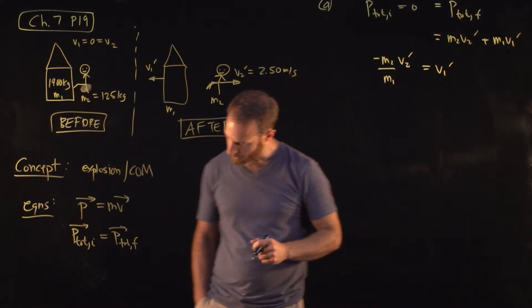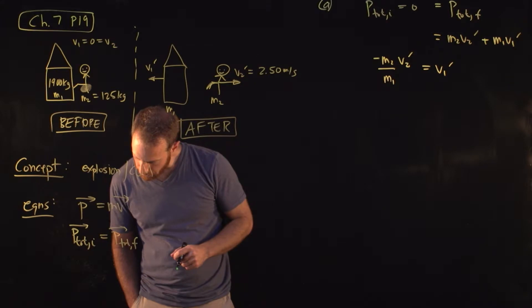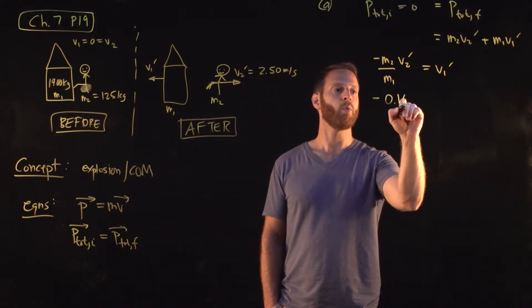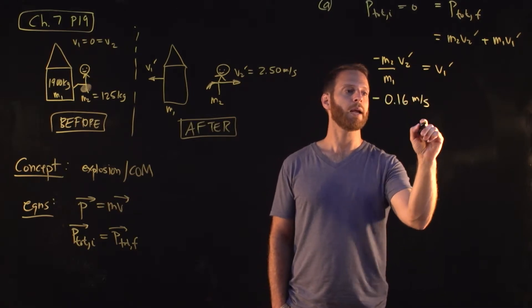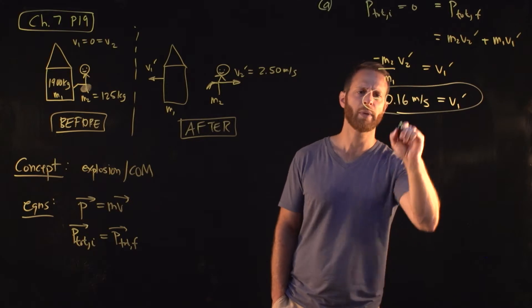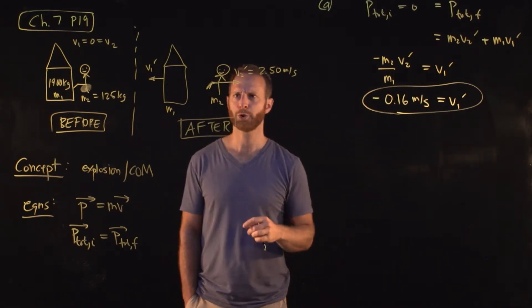We plug in the numbers, and we find that V1 prime gives us minus approximately 0.16 meters per second. So we should stop and do a little sanity check here. Does this make sense? First of all, it's negative. Should that be?